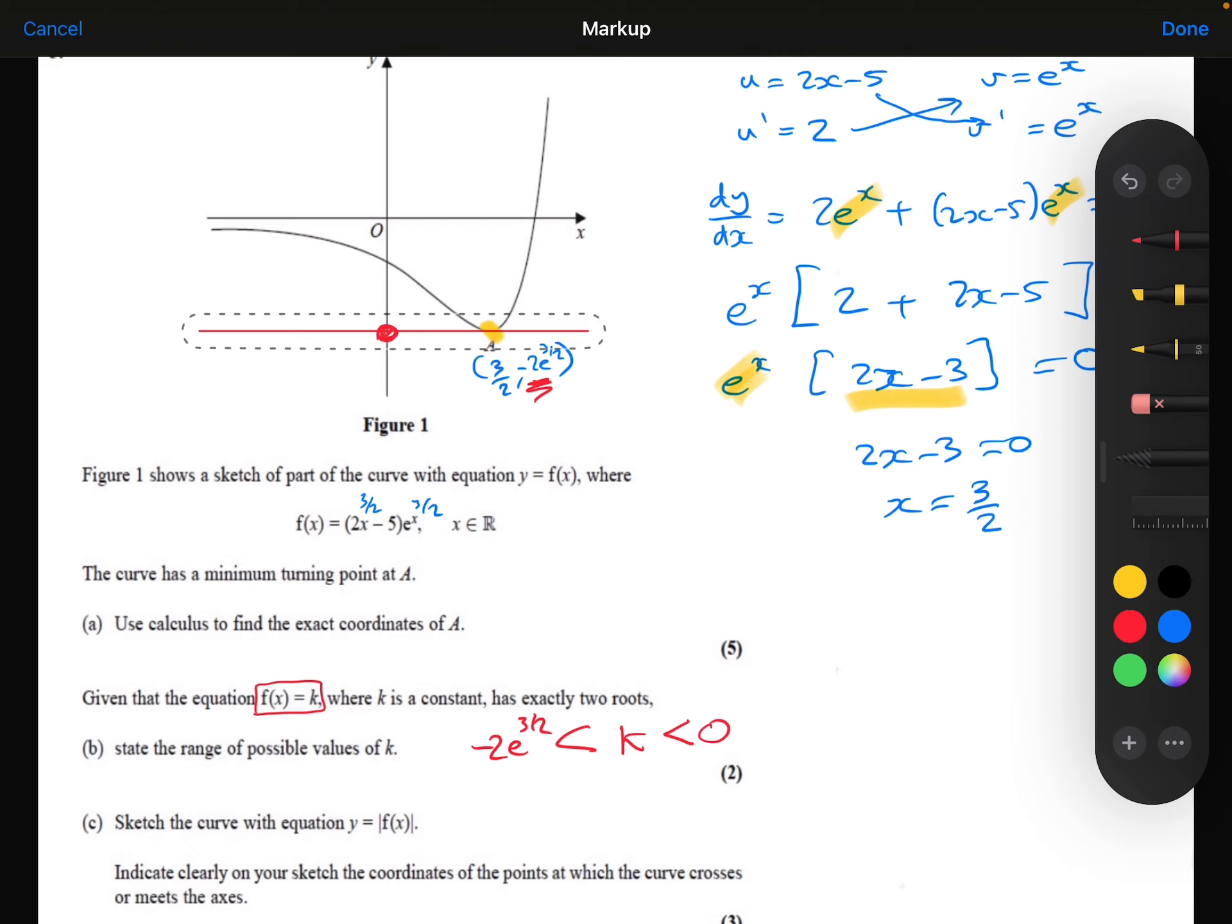Part C. Sketch the curve with equation y equals the modulus of f of x, indicating clearly on your sketch the coordinates of the points at which the curve crosses or meets the axis. Well, I know that the modulus on the outside of the f of x function is going to affect the y coordinates.